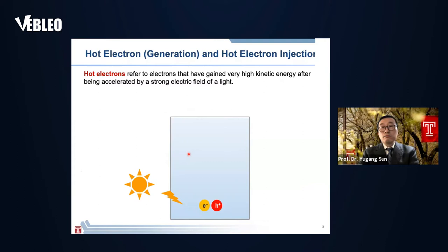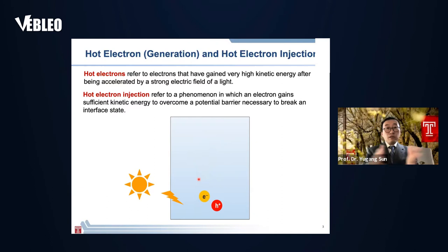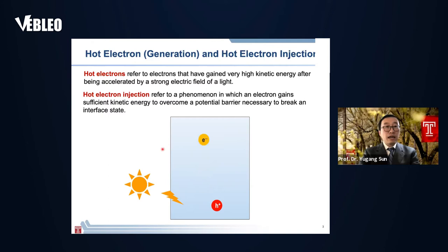Hot electrons are electrons that gain high kinetic energy that can be accelerated in an electric field, for example from light. These hot electrons have to be transferred into the surface-adsorbed molecules in order to drive a chemical reaction.